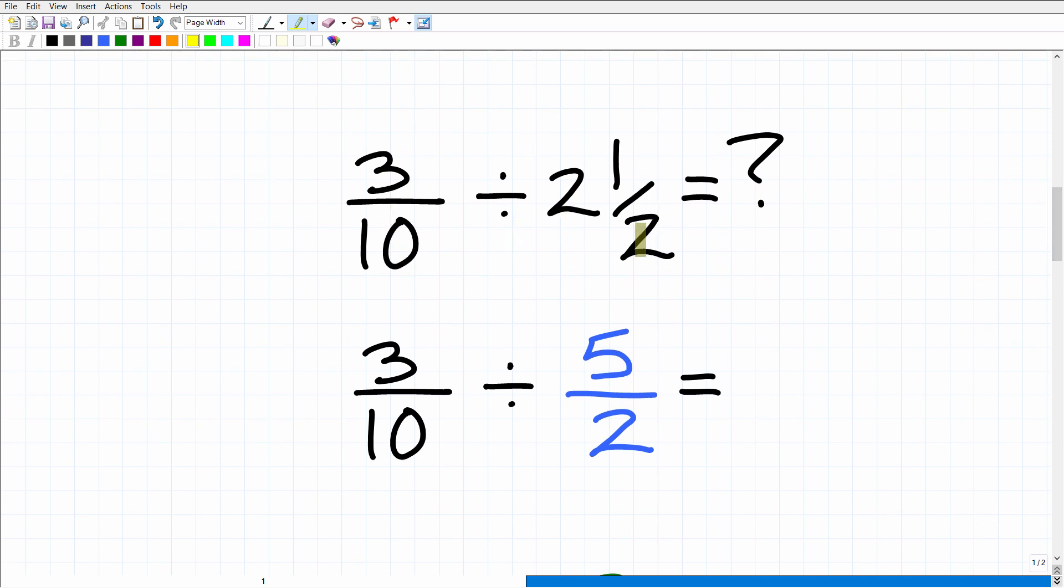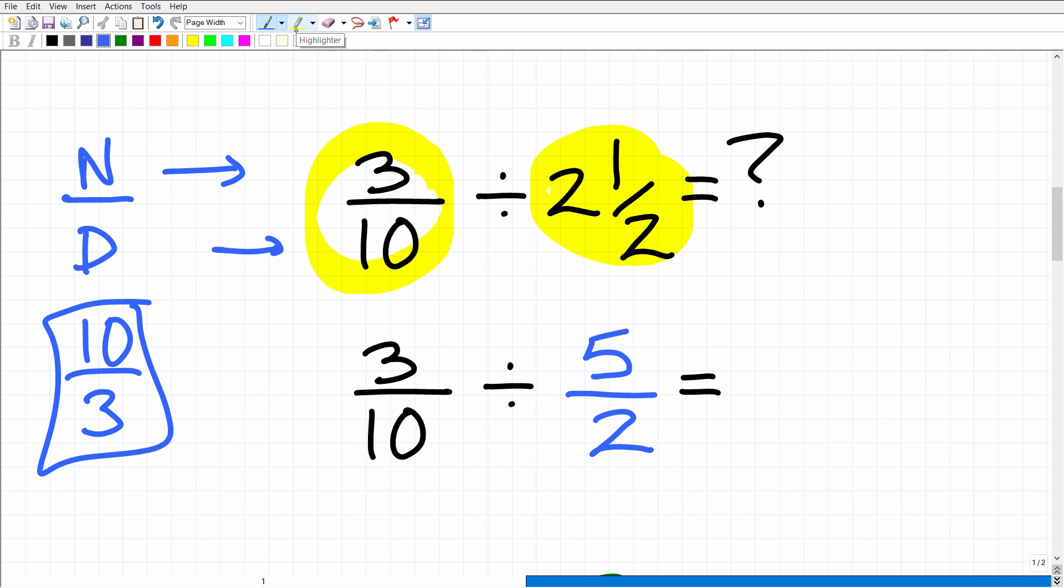We have 3 tenths divided by 2 and 1 half. Let's just quickly review some terminology. 3 tenths is what we call a proper fraction, because the top number, which is the numerator, is smaller than the bottom number, which is called the denominator. When you have this situation, we refer to this as a proper fraction. If we had the reverse of that, like 10 thirds, this is what we call an improper fraction. And if you have something like 2 and 1 half, we would refer to this type of fraction as a mixed number fraction.